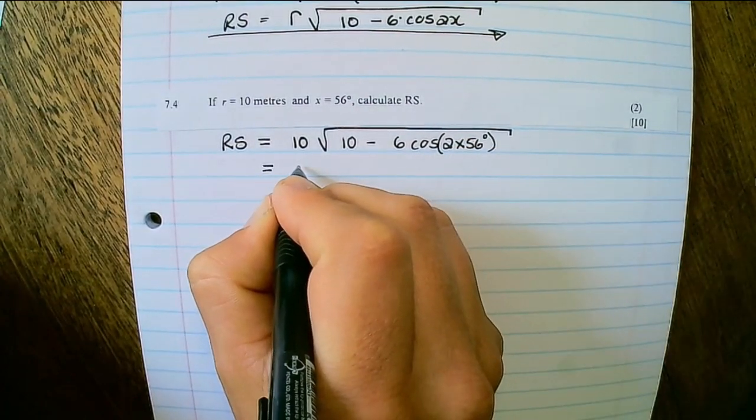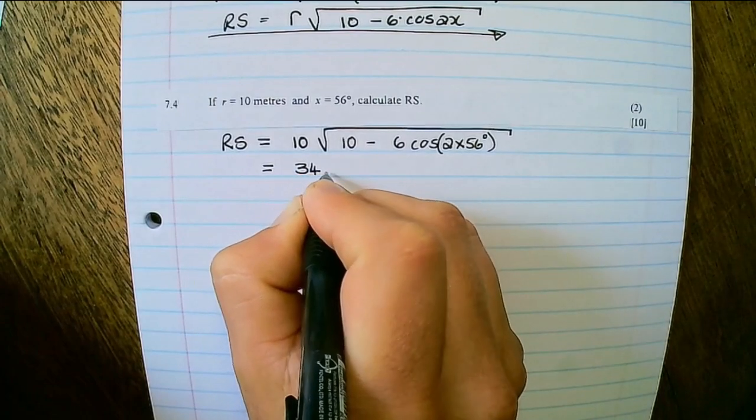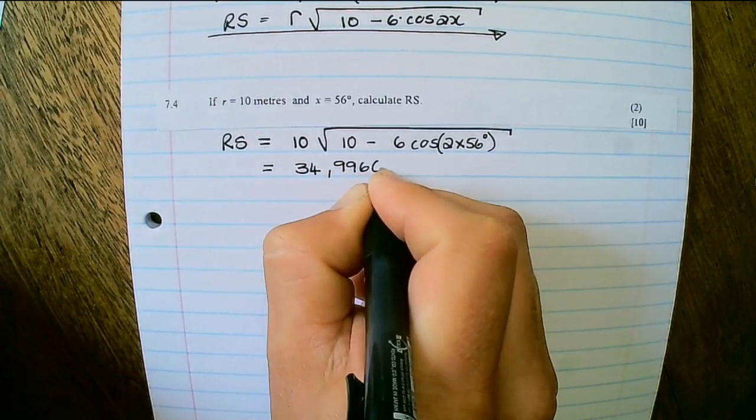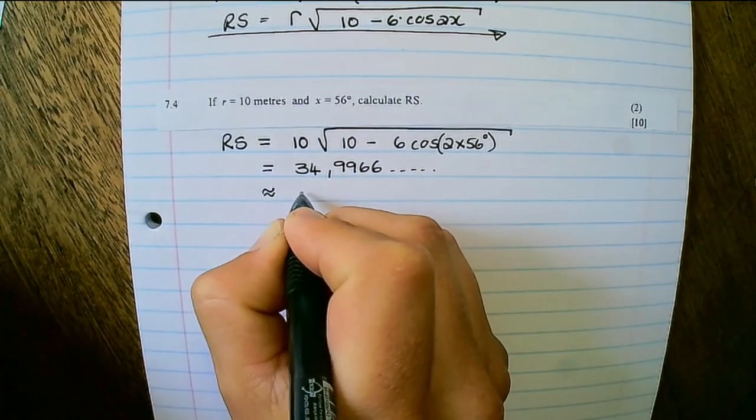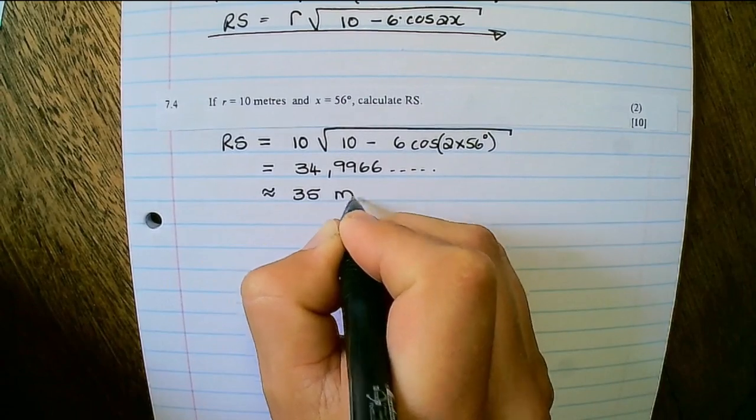And on my calculator, this will be 34.9966 and so forth. So therefore, the length of RS can be estimated to 35 meters.